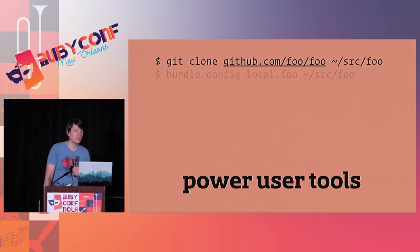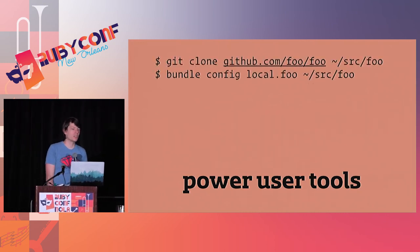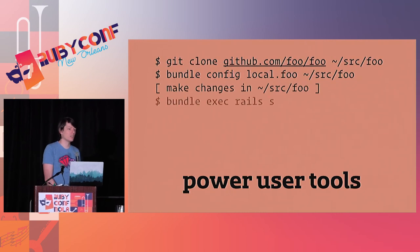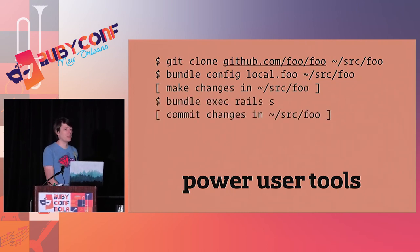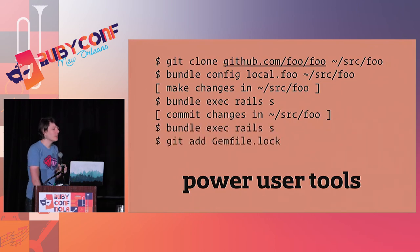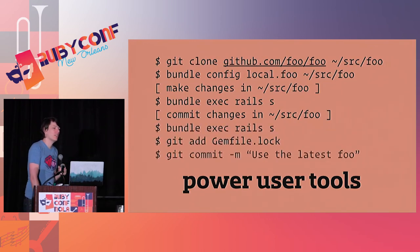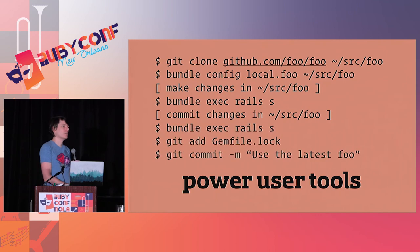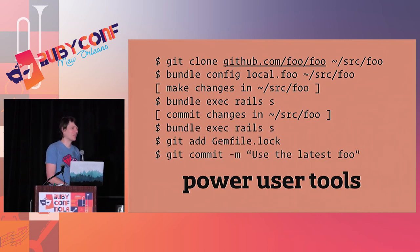The git local development thing I mentioned earlier: you can check out a gem that your application depends on, start using the local copy, make changes, and Bundler will update the lock file to the commit you've made locally. When you deploy, Bundler will make sure you're still running the code you expect rather than whatever you'd actually remembered to push.